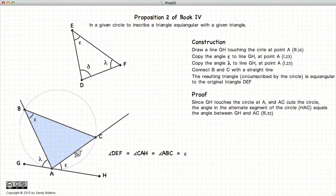Alternate segment means not this side, but this side of the line. The angle of the alternate segment. So this angle here at B is going to equal epsilon.